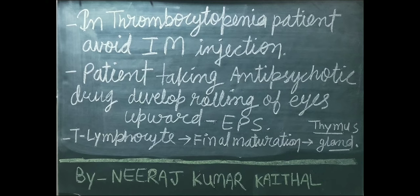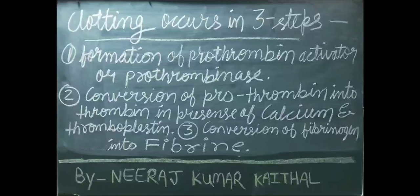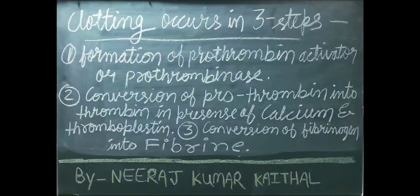T lymphocyte final maturation takes place in the thymus gland. T lymphocytes ka final maturation thymus gland mein hota hai. Hamare body mein blood clotting ya clotting process teen steps mein hoti hai. First step: formation of prothrombin activator or prothrombinase.